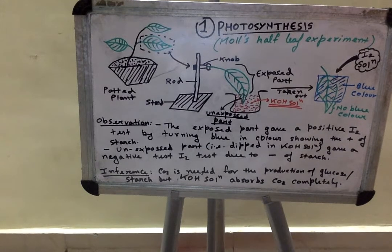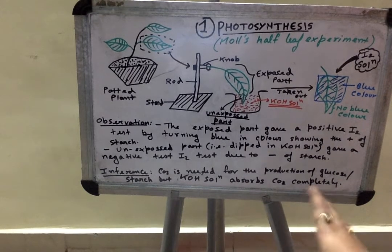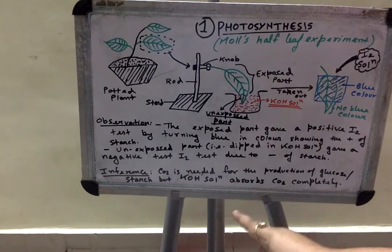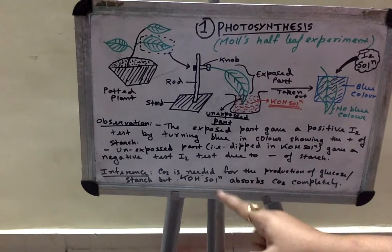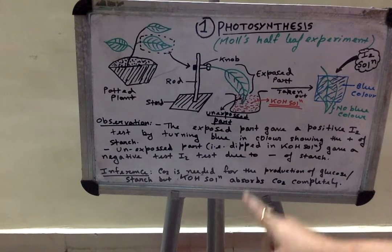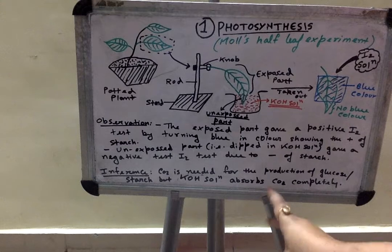The inference or what we conclude from this whole experiment is that carbon dioxide is needed for the production of glucose or starch, but potassium hydroxide solution absorbs carbon dioxide completely.